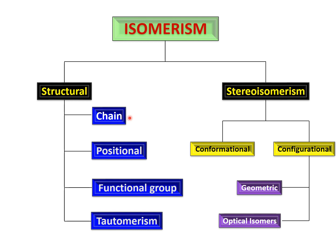Let's look at chain isomerism with an example. We have n-butane, which has four carbon atoms and 10 hydrogens, so the molecular formula is C4H10. n-Butane has four carbons in a chain, with hydrogens attached to each of the carbon atoms.